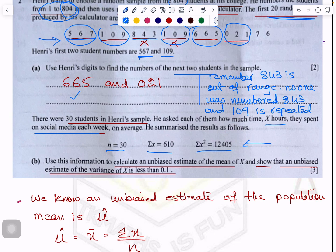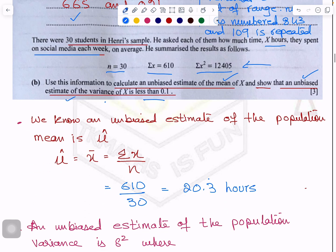First question is, use this information to calculate the unbiased estimation of the mean and show that the unbiased estimation of the variance of x is less than 0.1. These two questions were easy because they are very formula based. This is the formula for the unbiased estimation of the mean of population which is same as for the mean of population, sigma x over n. You got 20.3. It is better you write the unit here. That will reflect your sound understanding. What is the number representing?